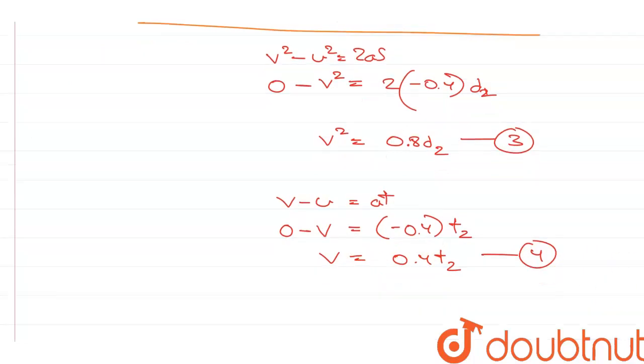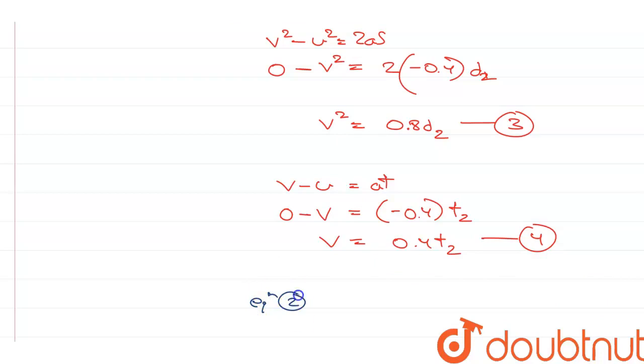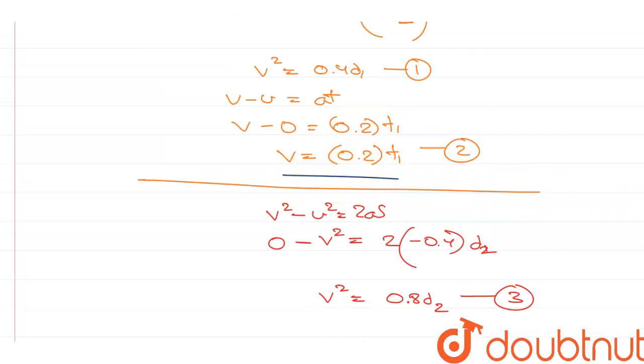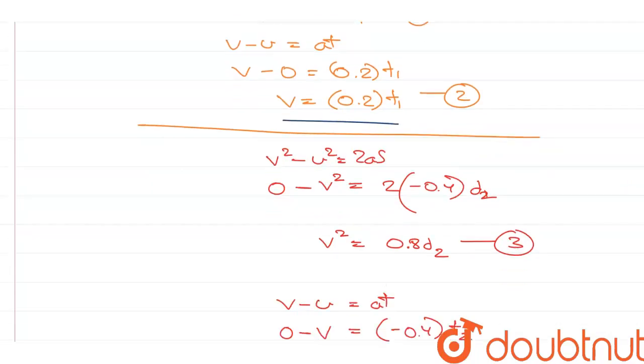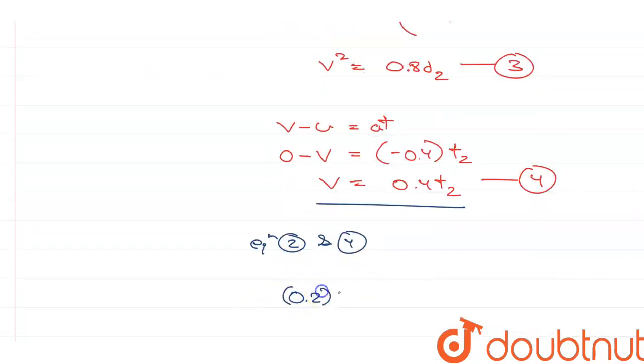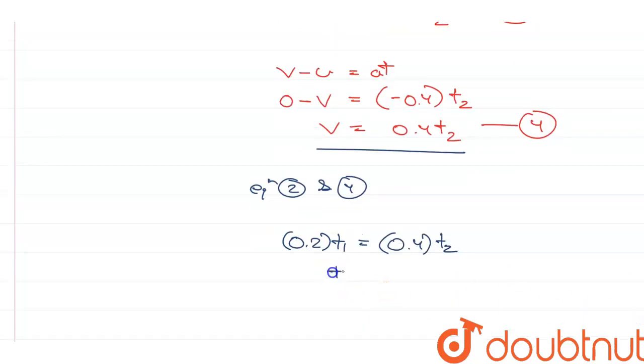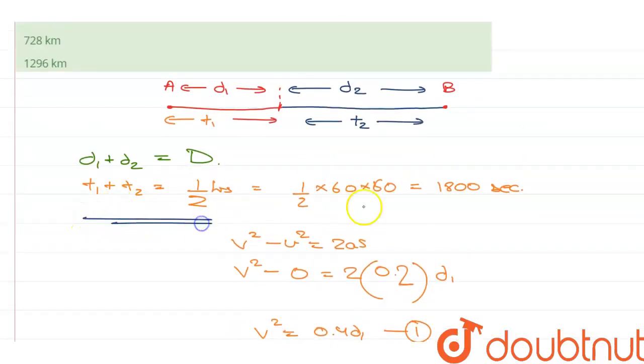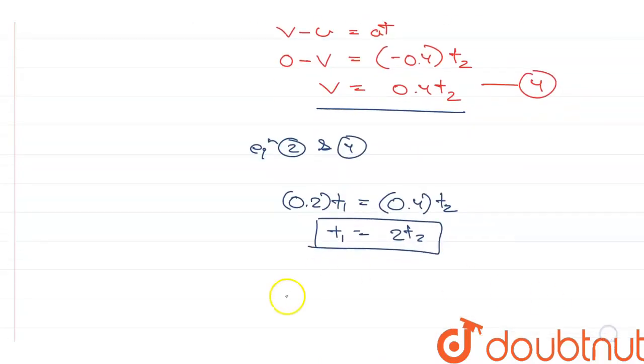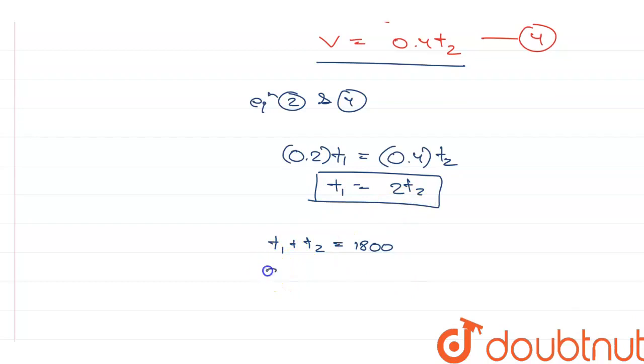Now, using equation 2 and 4, that is this equation and this equation, I can equate them because on the left hand side of both the equations is V. So, that gives me 0.2 times T1 is equal to 0.4 times T2 which means T1 is equal to 2 times T2. And I know that T1 plus T2 is equal to 1800 seconds. So, if I replace the value of T1 in terms of T2, I get 2T2 plus T2 is equal to 1800 which gives me 3T2 is equal to 1800.